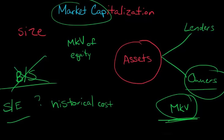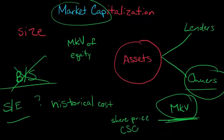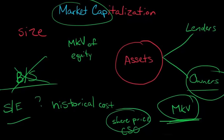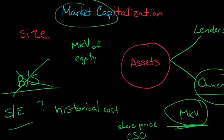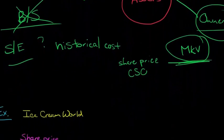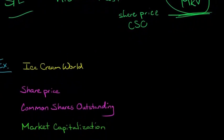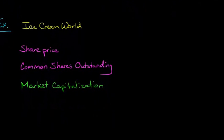So how do we calculate market cap now that we know what it is? We're going to need a couple of things. First, we need the firm's share price, and then we need to know the number of common shares outstanding. We don't care about preferred shares — we want to know how many common shares are outstanding and what's the share price. It's actually a pretty straightforward calculation.